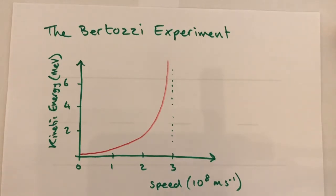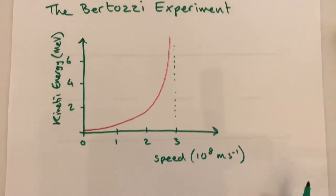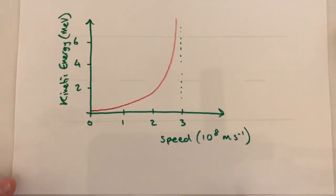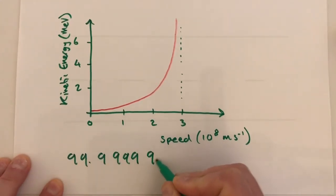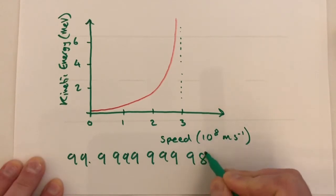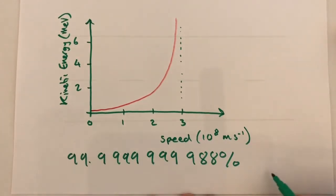As of 2020, the highest electron speed ever achieved in a particle accelerator was 99.9999999988% of the speed of light at the large electron-positron collider. That speed is still less than the ultimate speed c, 3 times 10 to the 8 meters per second.